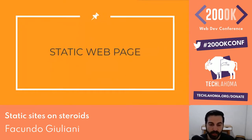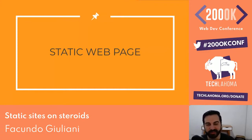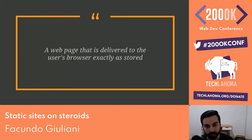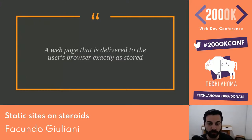First, we'll talk about what static web pages are. A static web page is a web page that is delivered to the user's browser exactly as stored. A web page can be composed of JavaScript files, HTML files, CSS files, or all of them. We call it a static web page when the content is the same for all users — we deliver it right from the server.